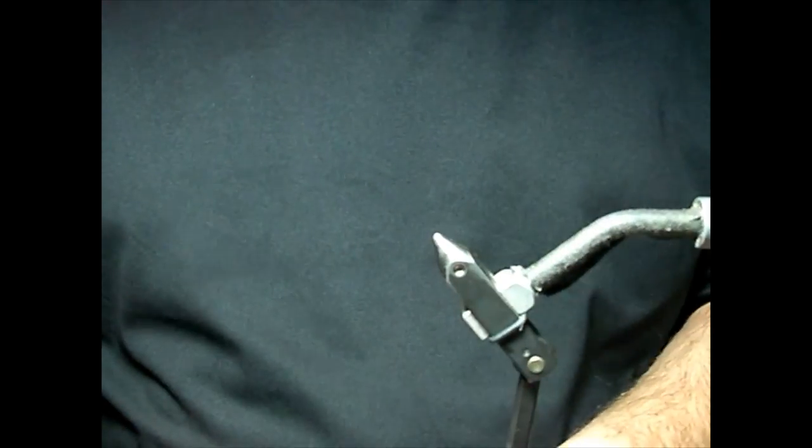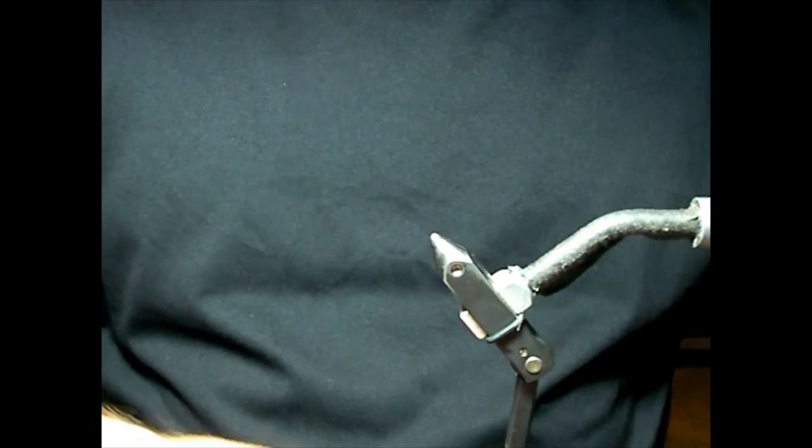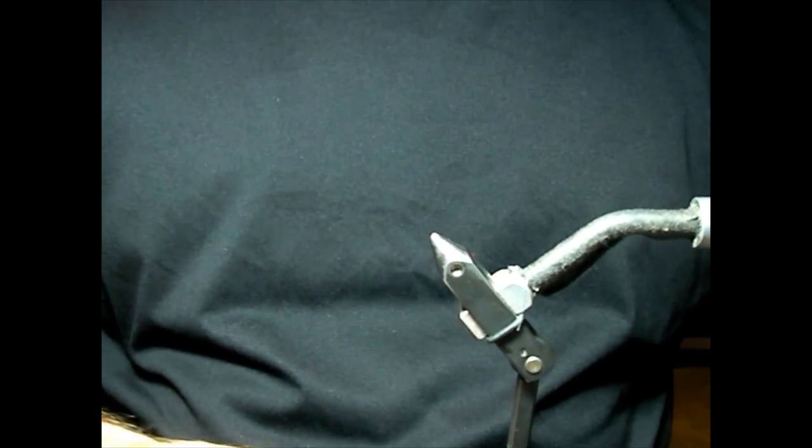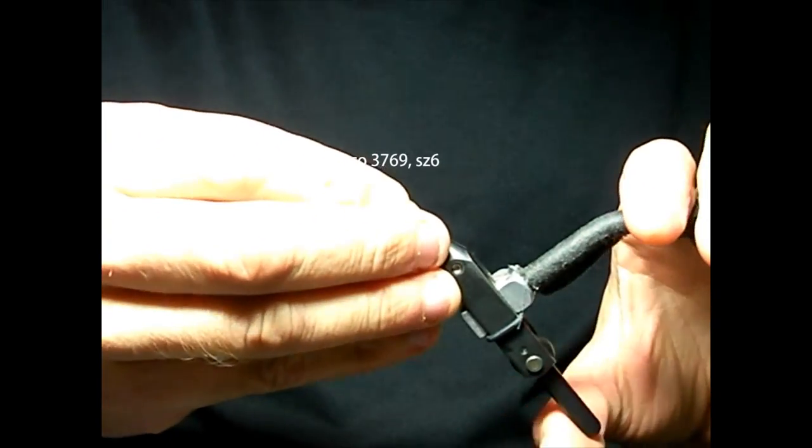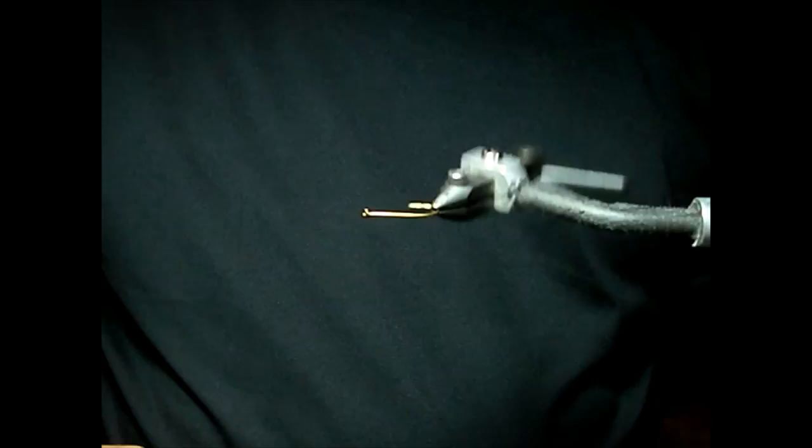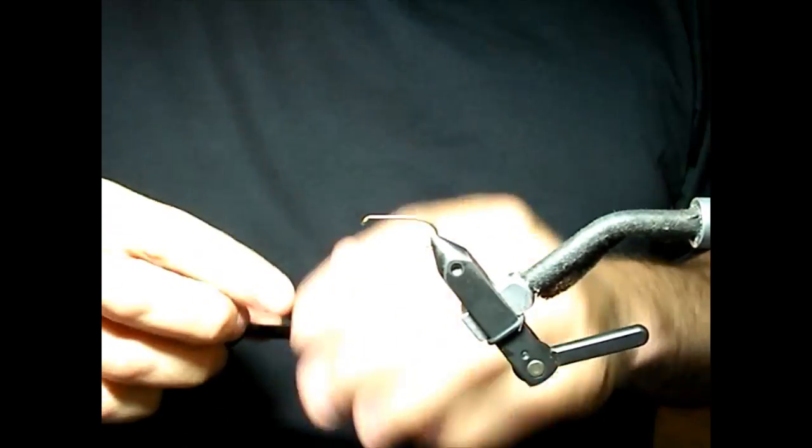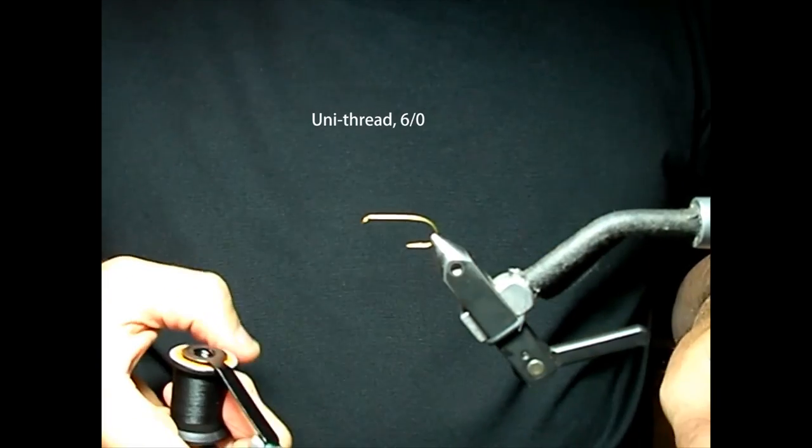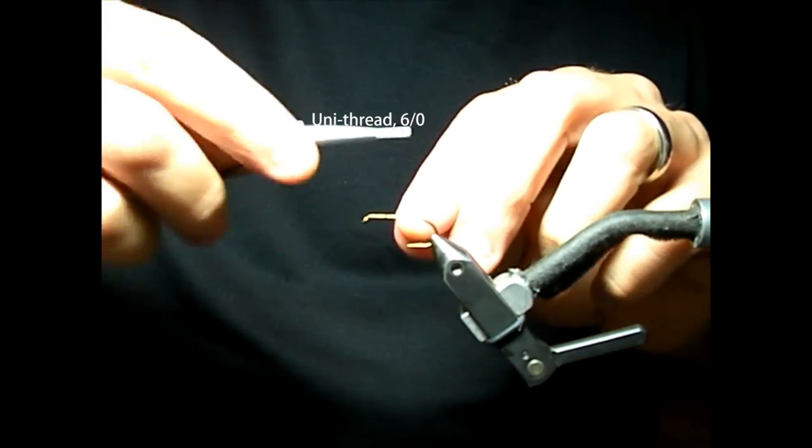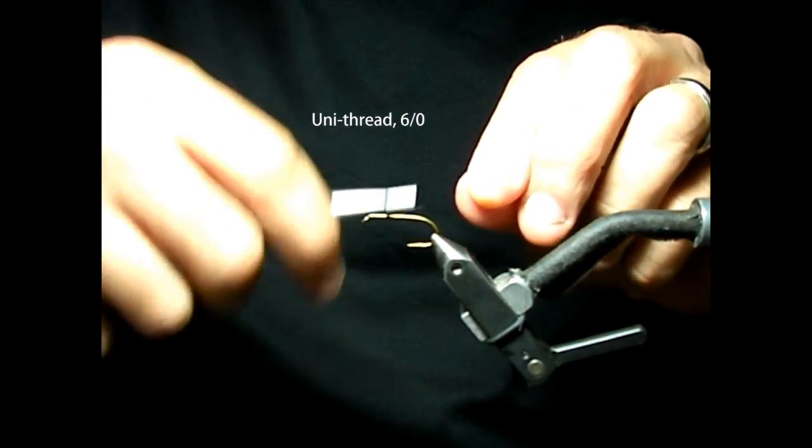We're going to start off with a Temco 3769 size 6 hook, mount that in the vise, and then today we're wrapping with a unithread in the 6-aught size.